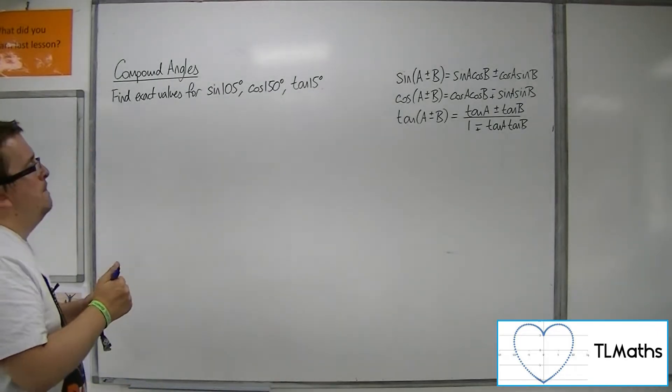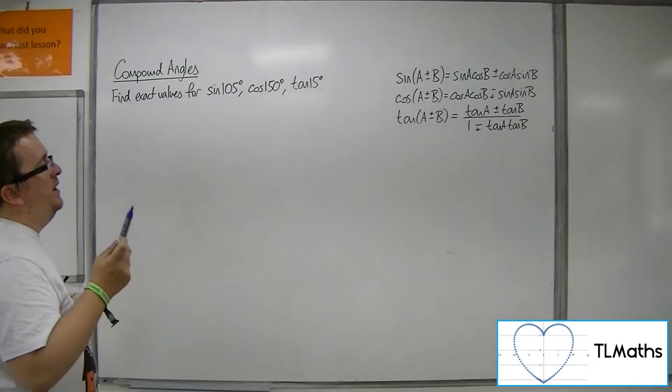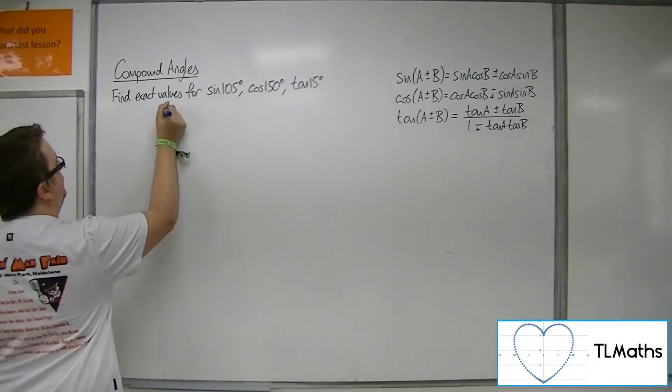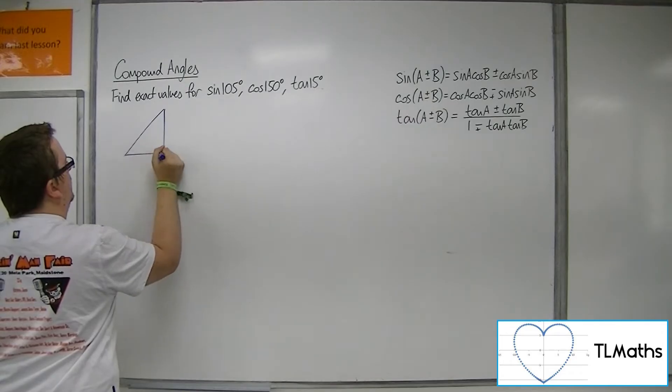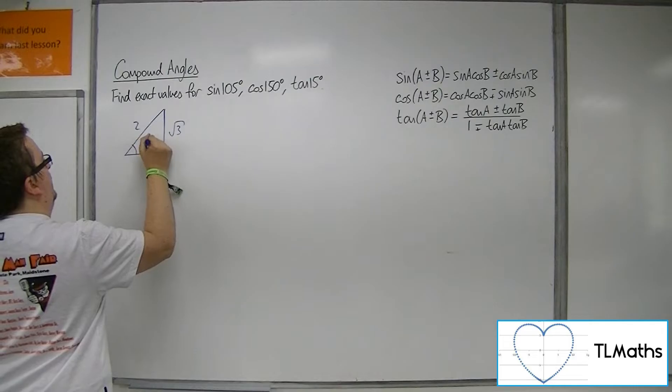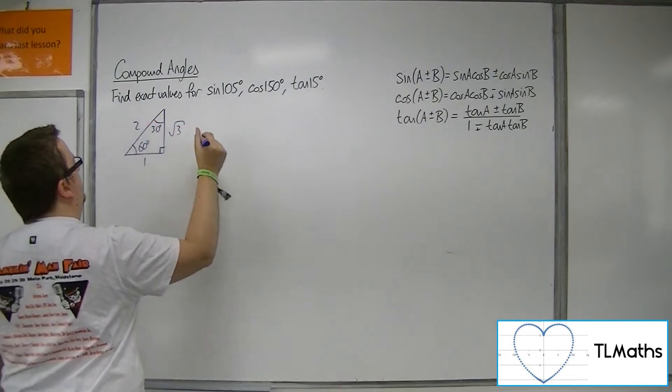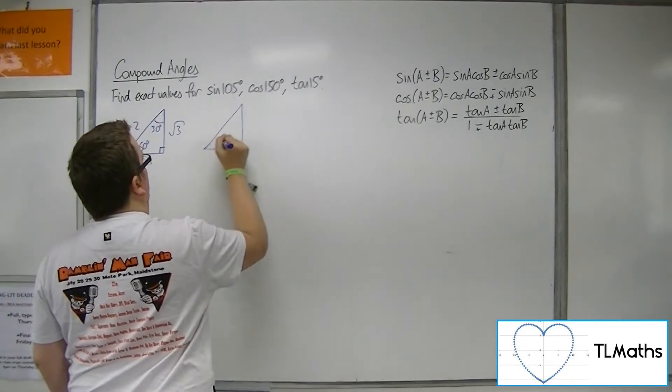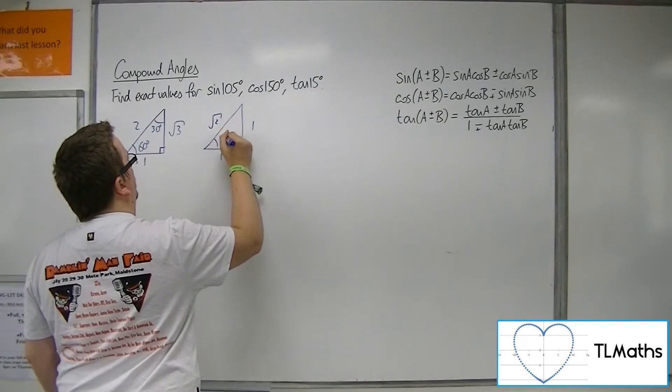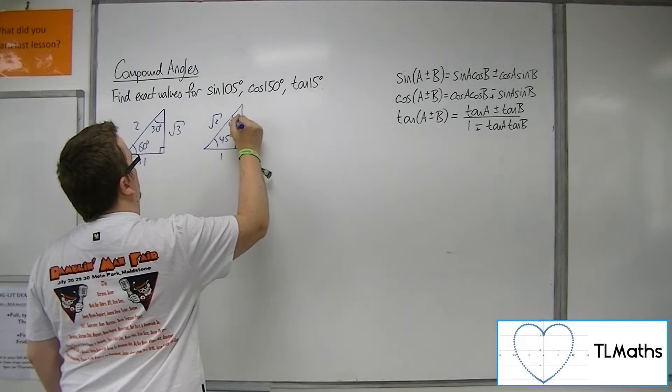We're going to utilize the two triangles that we need to remember. We've got those two right-angled triangles: 1, 2, root 3, 60 degrees and 30 degrees, and the second one: 1, 1, root 2, 45 and 45.